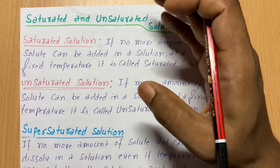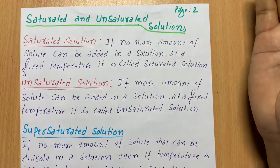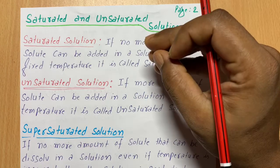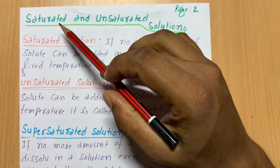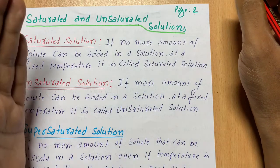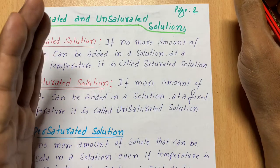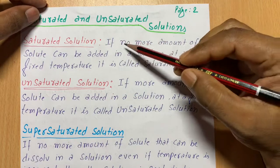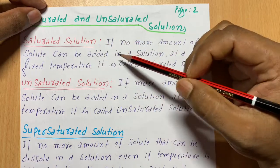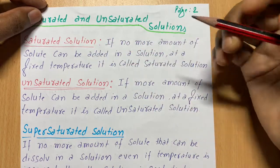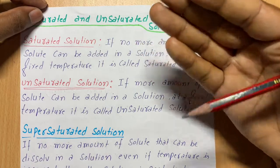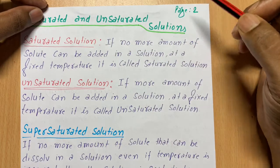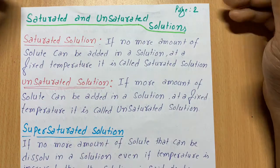When you reach the point where no more solute can be added at a fixed temperature, that situation is called a saturated solution. The key word here is fixed temperature — because if you increase the temperature, you can dissolve more solute. So the amount of solute you can add depends on the temperature of the solution.